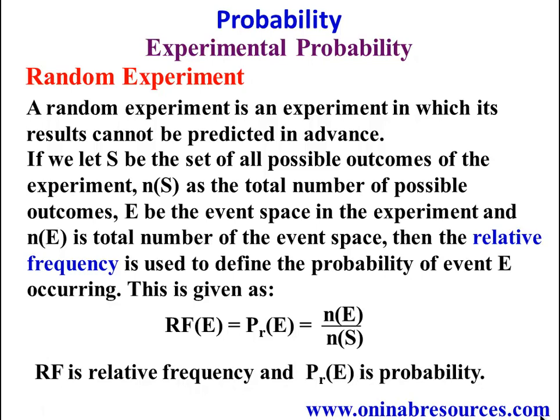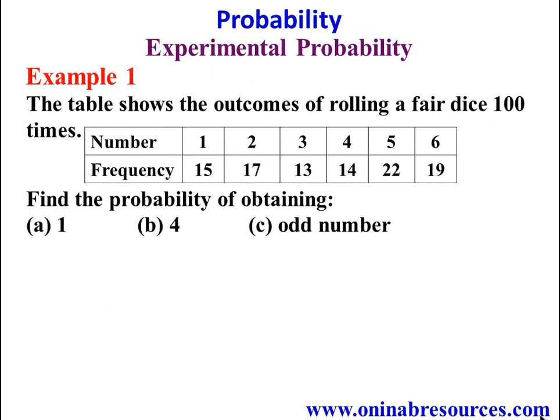So we now look at solved problems. Example 1: The table below shows the outcomes of rolling a fair dice 100 times. We have the numbers 1 to 6, which are the numbers written on the faces of a dice, and the given frequencies are there. Find the probability of obtaining: A) 1, B) 4, C) odd number.